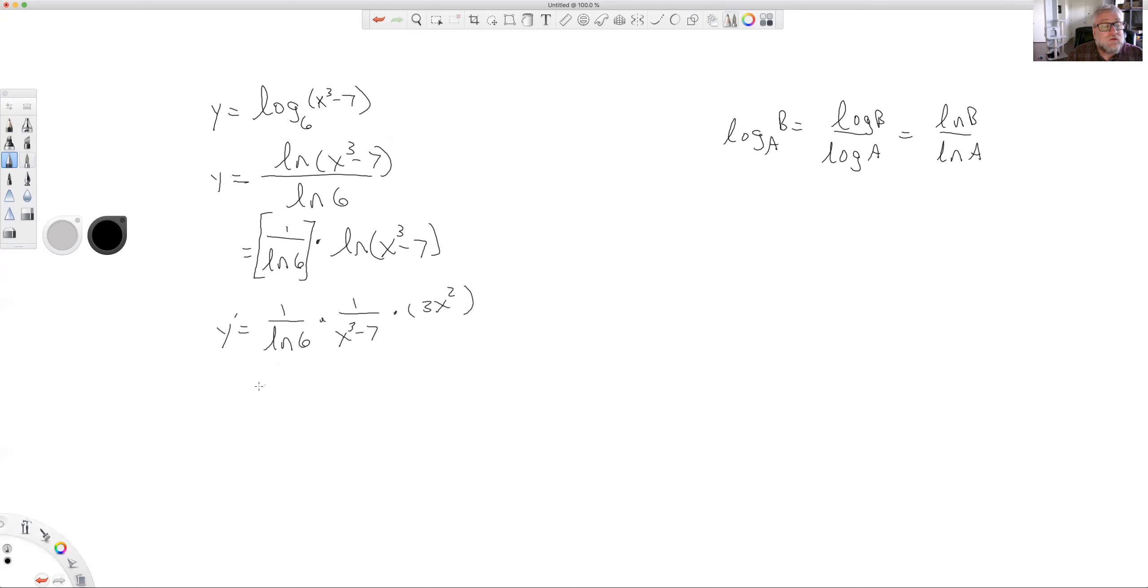So we end up with y prime equals 3x squared over natural log 6 times (x³ - 7). So we'll end this video here and do a couple more difficult problems in the next video.